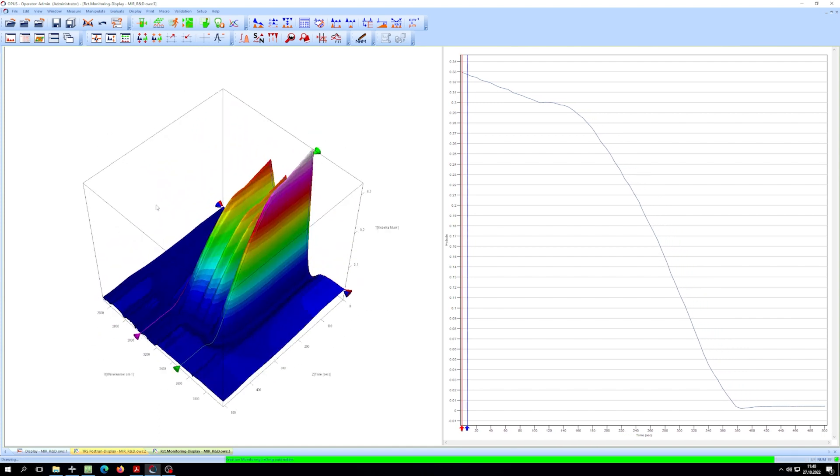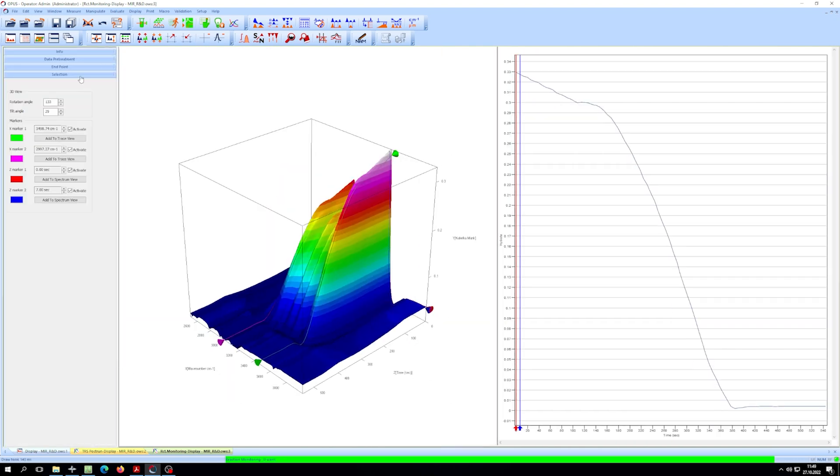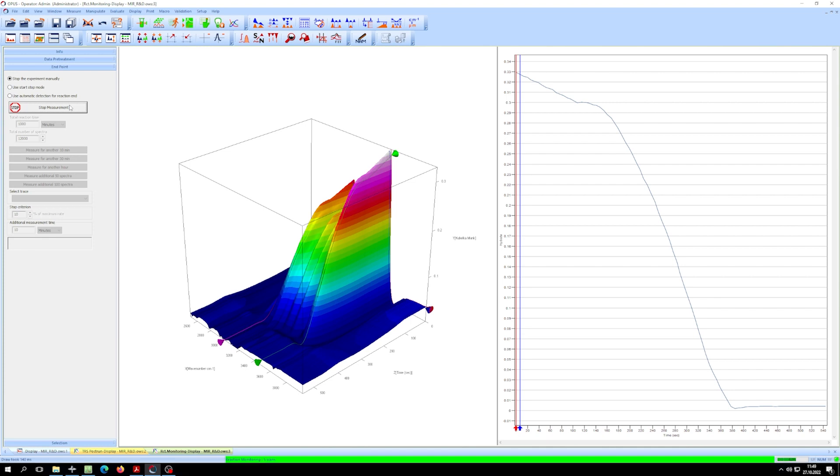You can rotate the 3D plot during the measurement to observe the spectra over time more closely, until you are sure the reaction is over. Then, you can manually stop the measurement. The data will be automatically saved, including all spectra and trace information.